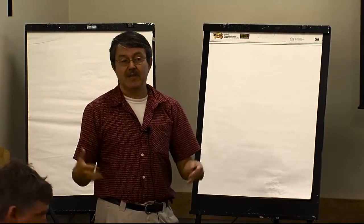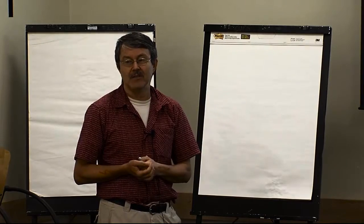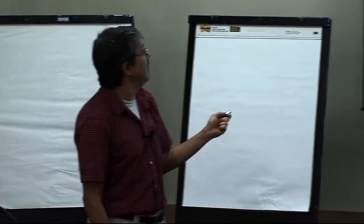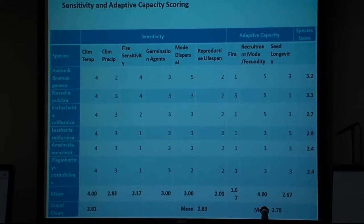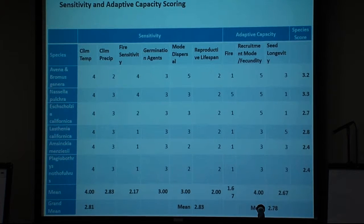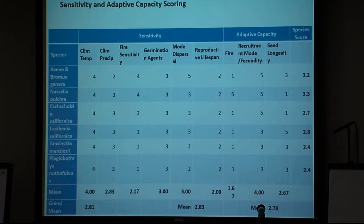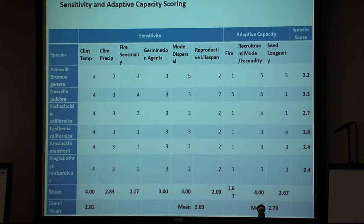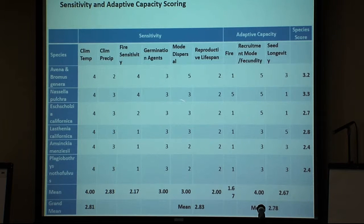To understand the overall sensitivity and adaptive capacity — the biological component of our ability to adapt to climate change for a vegetation type — we get these means. We look at sensitivity to temperature and precip, to fire, and germination agents. If you have to have winter cold to germinate or heat to germinate, maybe you're more sensitive. But if you're a facultative germinator with a seed that lives in the seed bank for a long time and comes out when you get rain, that's actually a positive thing if we're going to see more noise in how climate is progressing.